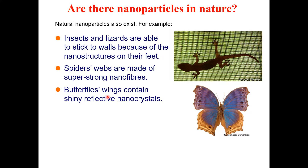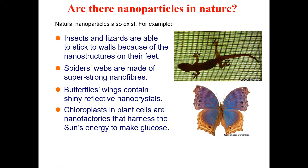Another example is butterfly wings. Butterfly wings contain shiny reflective nanocrystals. When light falls on those crystals, it produces different beautiful colors which we normally observe. The shiny appearance of butterflies is due to nanocrystals in their wings, which give them contrasting nanoscale optical properties.